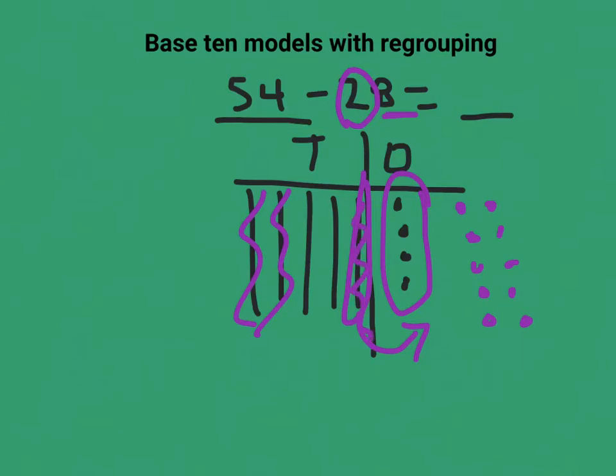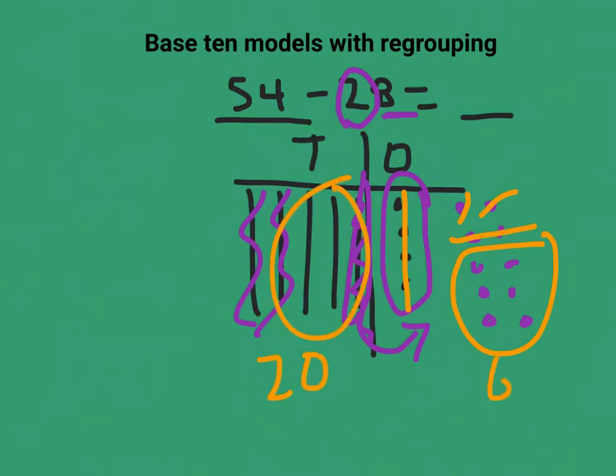Now I am able to get rid of eight ones. So I'm going to do that now: 4, 5, 6, 7, 8. So this is what I have left over on the one side. So the answer is 26. 54 minus 28 is 26.